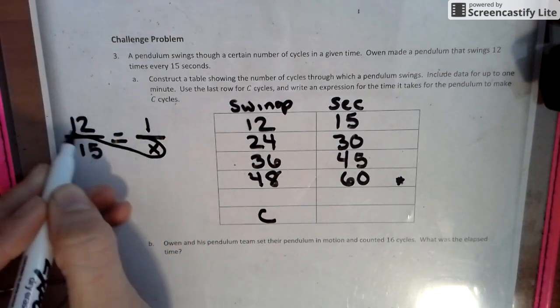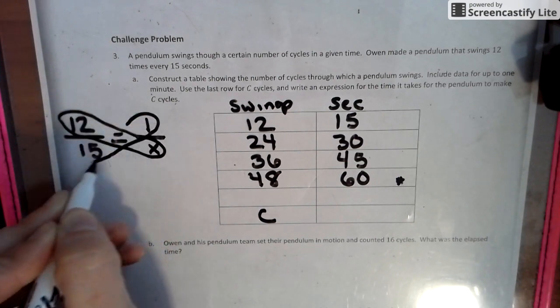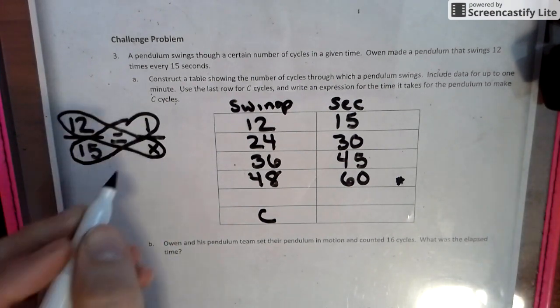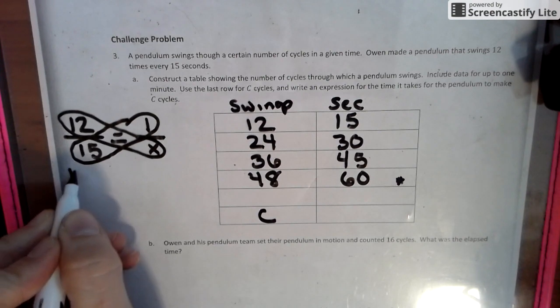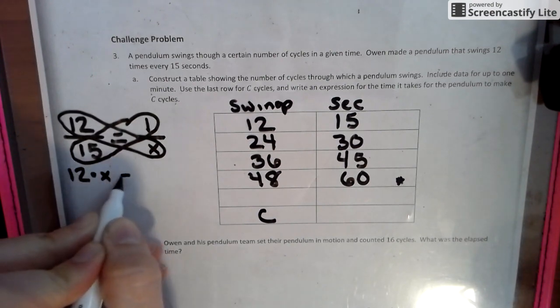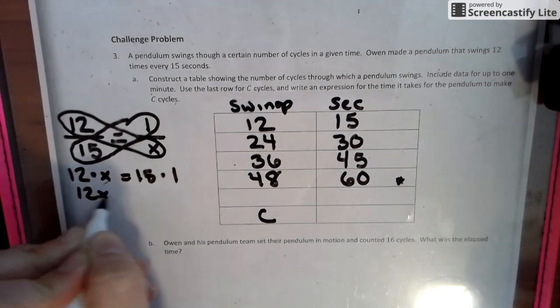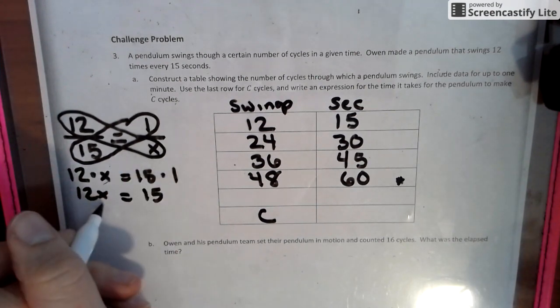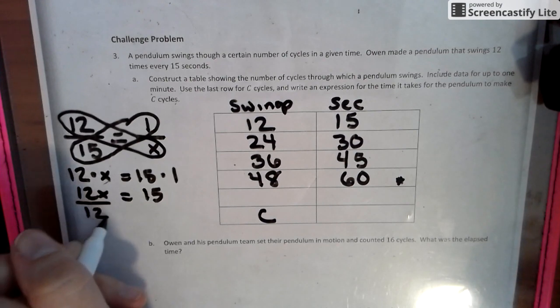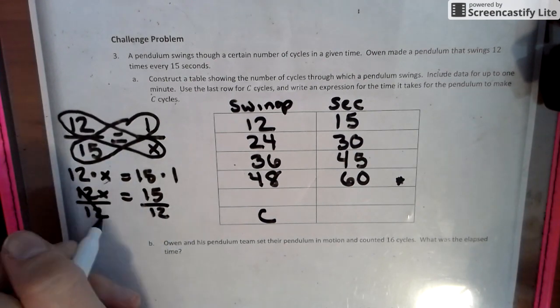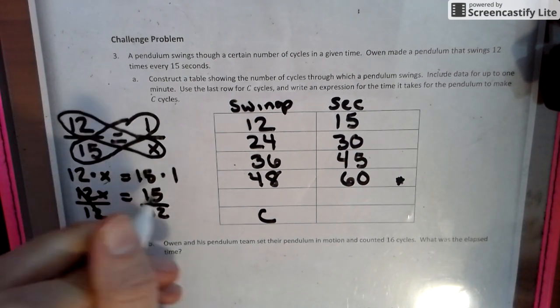So we're going to do cross multiplication. You guys called it band-aids, butterflies, flower, whatever. We go 12 times X equals 15 times one. Put those together for 12X equals 15. And then we have to divide by the number touching the letter because that's how we end every proportion. So we have X equals this.